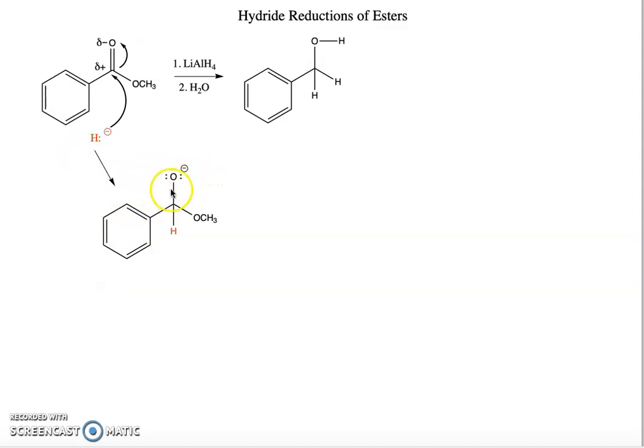The next thing that happens is that the electrons on the oxygen come down and the OCH3 leaves. We get this aldehyde plus the methoxide ion that has been kicked off of the molecule.